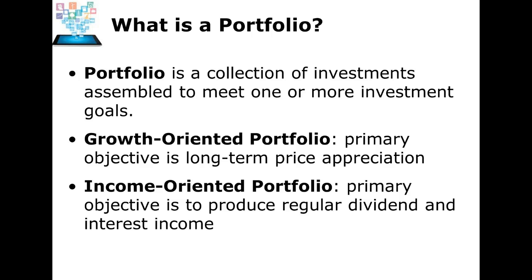A growth-oriented portfolio is just like it seems — you're putting together investments for growth, primarily looking for capital gains. An income-oriented portfolio looks to throw off income, such as bonds, municipal bonds, and high dividend-yielding stocks. We're not looking for a huge amount of capital gains; we're looking mostly for monthly income through dividends.